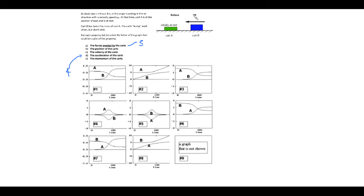Let's think about the position of the two carts. We know that B starts at the origin and A starts positive of the origin. Cart A is going to be at the same positive position for a while and then it's going to move off to a more positive position. The only graph that shows A essentially stationary and then getting hit and moving in the positive direction is graph number two. We can see B traveling at constant velocity — the gradient of the position graph is constant — then it hits cart A and decreases its velocity, giving a decreasing gradient.